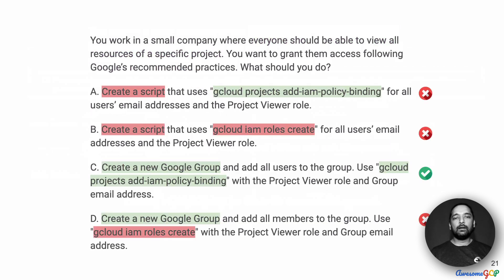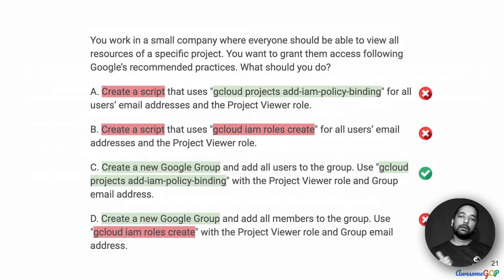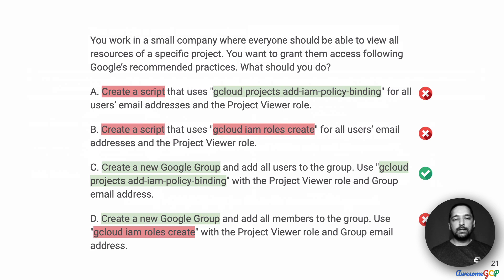Combining the options we found good and those that were not workable: creating a script is not a good idea, adding IAM policy binding is the right approach, and creating a new role is unnecessary since we already have a suitable role. Looking at all of them together, only option C has both elements that are suitable for us, and therefore it is the correct answer for this question.